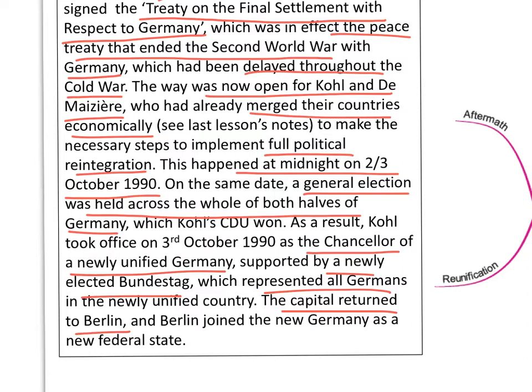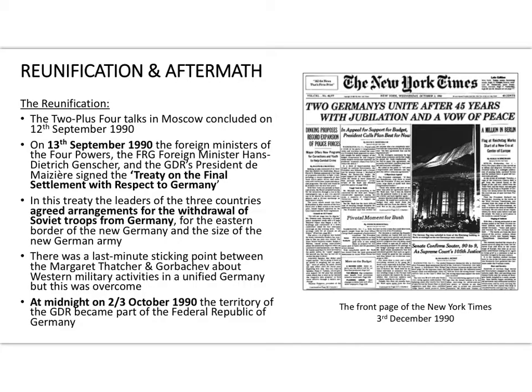The capital no longer needed to be Bonn, so it returned to Berlin. Berlin joined the new Germany as a new federal state. Throughout the Cold War era, West Berlin was in effect really part of West Germany but not officially — Berlin representatives could only sit in the Bundestag as observers due to the occupation statute and Potsdam Agreement. Now Berlin became a fully constituted federal state, part of the new Germany.